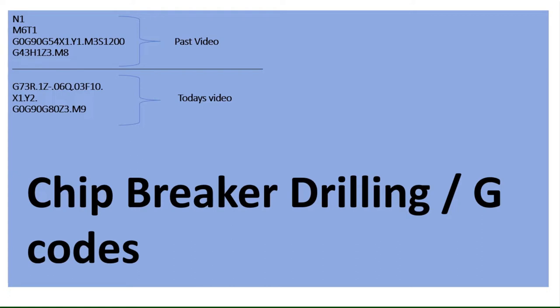What a chip breaker drill cycle is, it's very similar to our last video of a G83 except the drill does not retract to the R value. Normally retracted to the R value right here. This one just retracts most of them are in the parameters about 50 thousandths, it'll retract and then it'll continue to go.